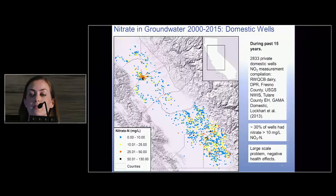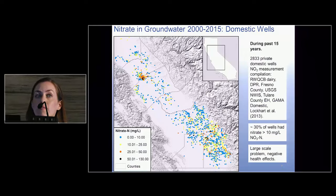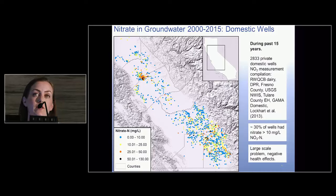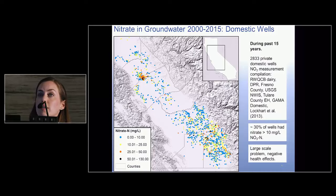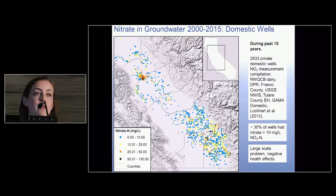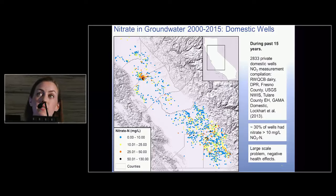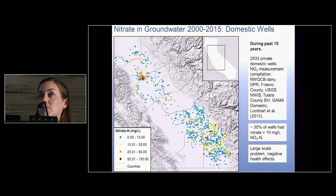My study focuses on private domestic wells in the Central Valley of California, an area of very intensive agricultural farming with over 2,000 dairies and 7 million acres of irrigated cropland. A recent USGS estimate put over 90,000 private domestic wells in the Central Valley.